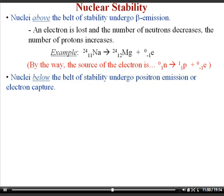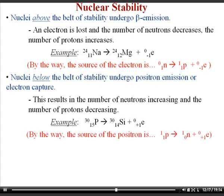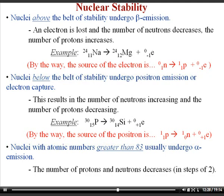Nuclei below the belt of stability (too few neutrons) undergo positron emission or electron capture, which increases neutrons and decreases protons. For example, phosphorus-30 decays to silicon-30: protons drop from 15 to 14, neutrons increase from 15 to 16 as a positron is released — one proton turns into a neutron. For nuclei with atomic numbers greater than 83, alpha emission is common: both proton and neutron counts drop by 2. Polonium-212 turns into lead-208, losing 4 in total mass.